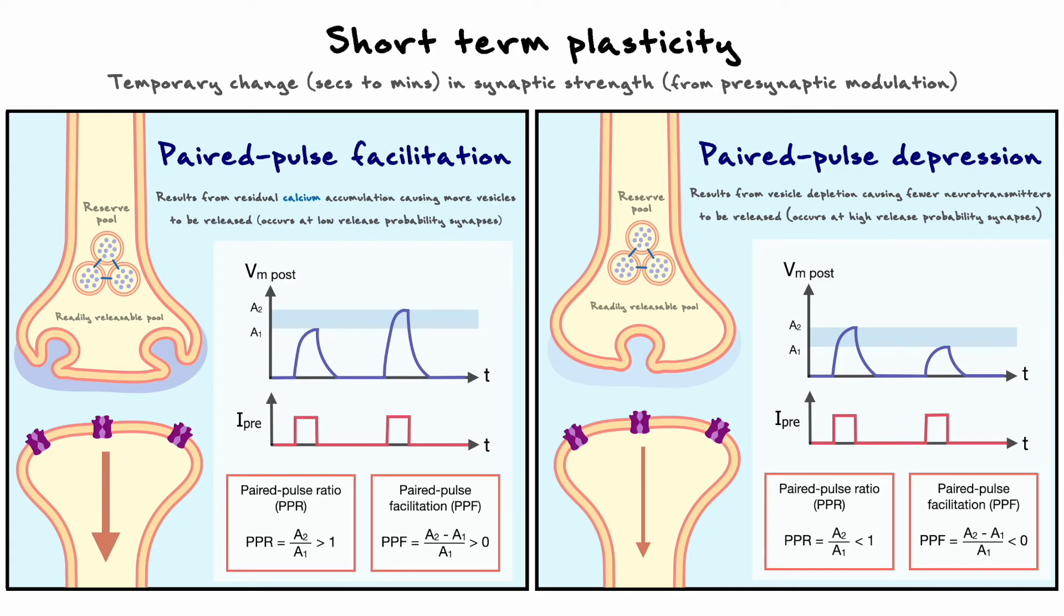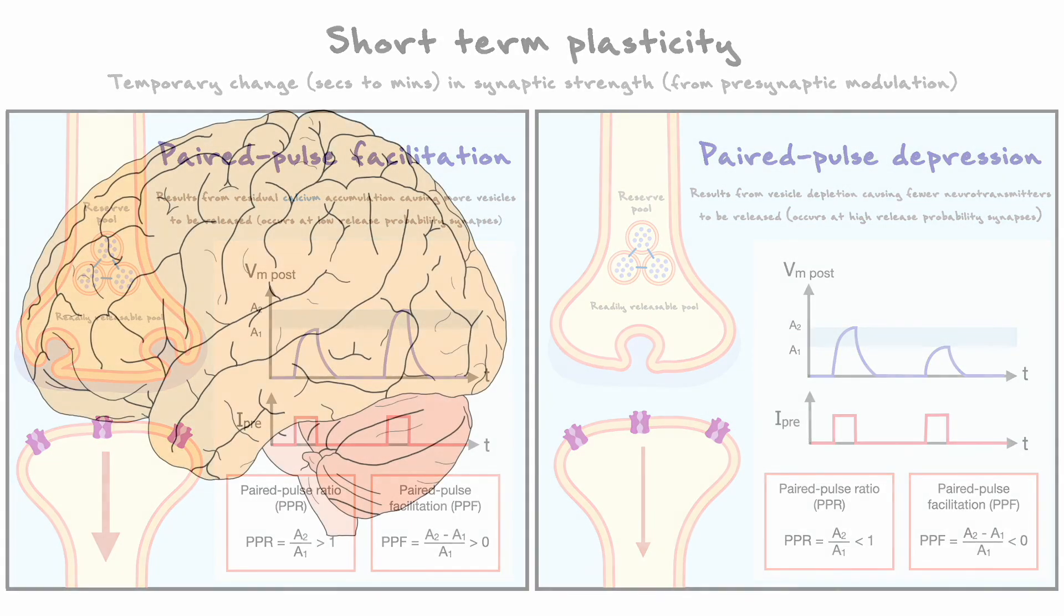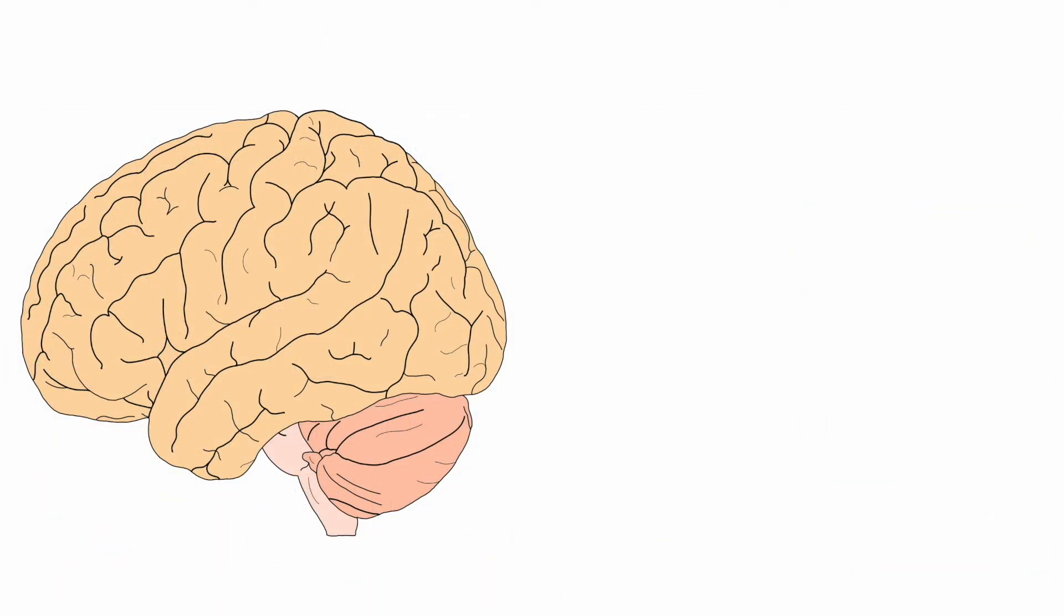Now that we understand a bit more how plasticity occurs in the short term, let's explore the long term aspect. To do so, we will consider an important area in the brain, named the hippocampus, that has been instrumental in the discovery and the development of synaptic plasticity.